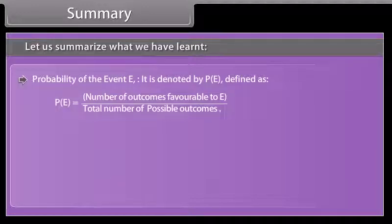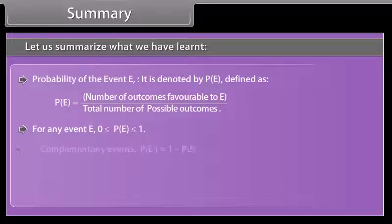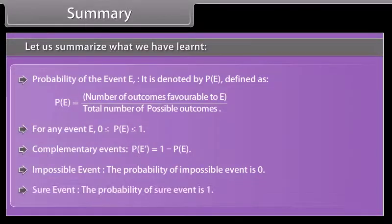Did you know? P(E) = number of outcomes favorable to E divided by total number of possible outcomes. For any event E, 0 ≤ P(E) ≤ 1. Complementary events: P(not E) = 1 − P(E). Impossible event: the probability of an impossible event is zero. Sure event: the probability of a sure event is one.